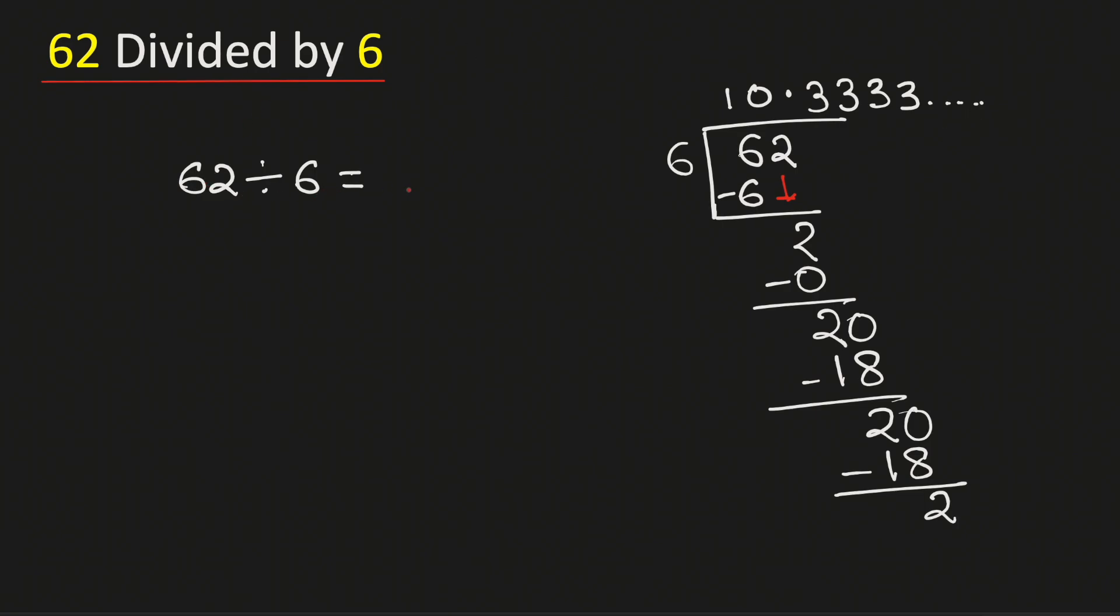Therefore, 62 divided by 6 is equal to 10.333 and so on. This can be rewritten as 10.3 bar, which means 3 gets repeated.